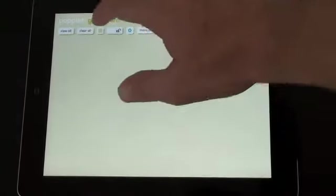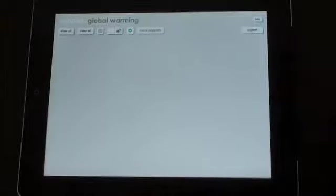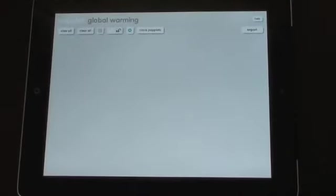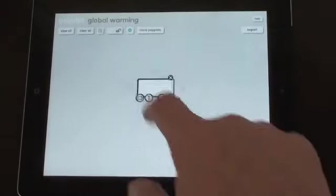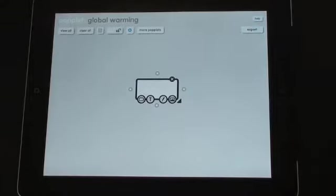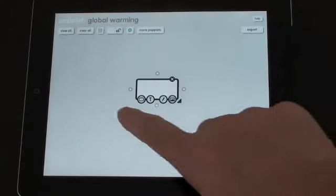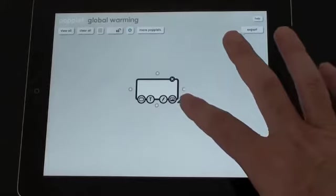To insert a box, a Poplet, you just double tap and it puts a box in for you. It automatically comes up with a range of options on that box.